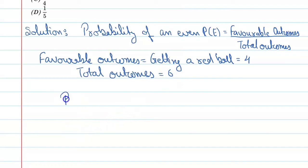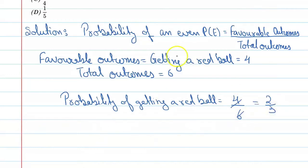So probability of getting a red ball, the given event is two by three and the correct option is B. Therefore probability of the given event is two by three and the correct option is B.